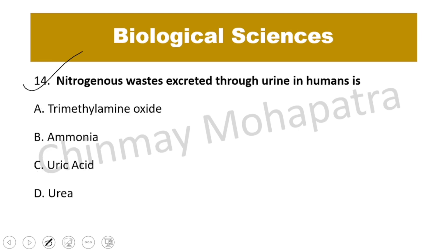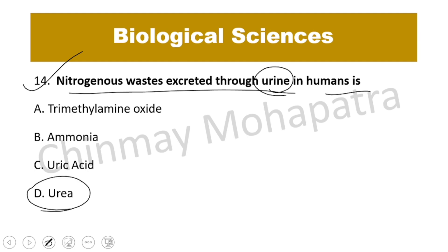Question number 14: The nitrogenous waste excreted through urine in humans is urea.